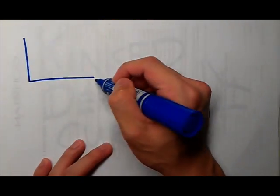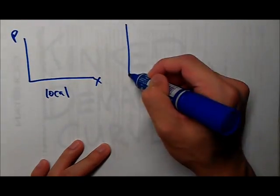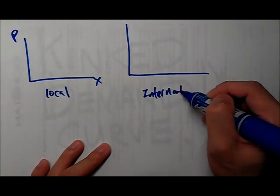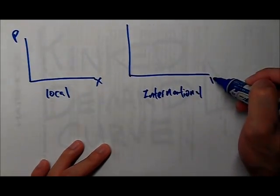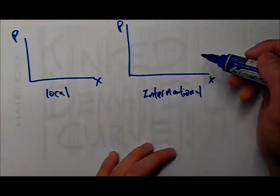Before we do anything, we need to look at the two kinds of demand that we are facing. One, there's a local demand and there's international. They are telling us that the international demand has a higher price elasticity.